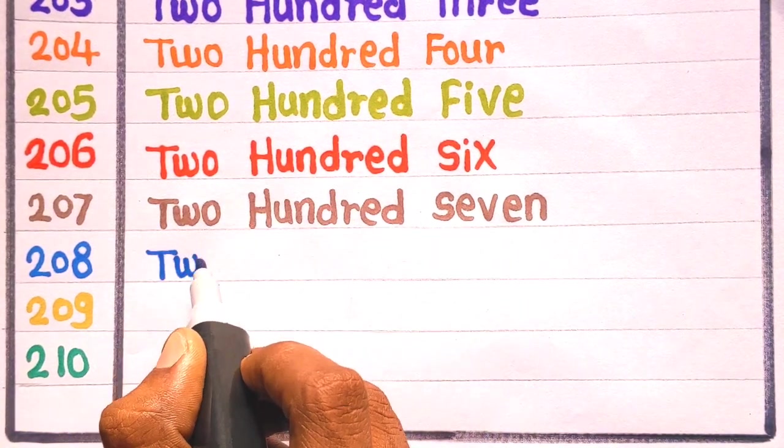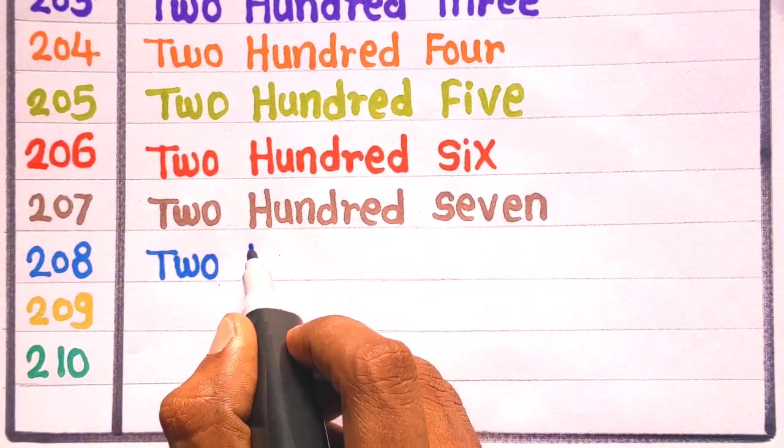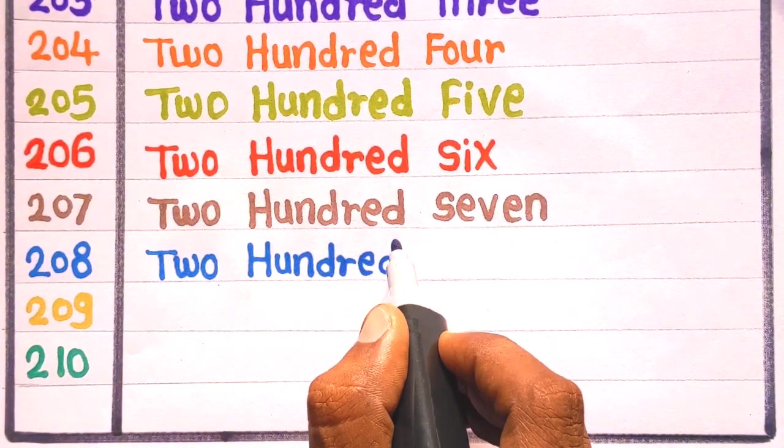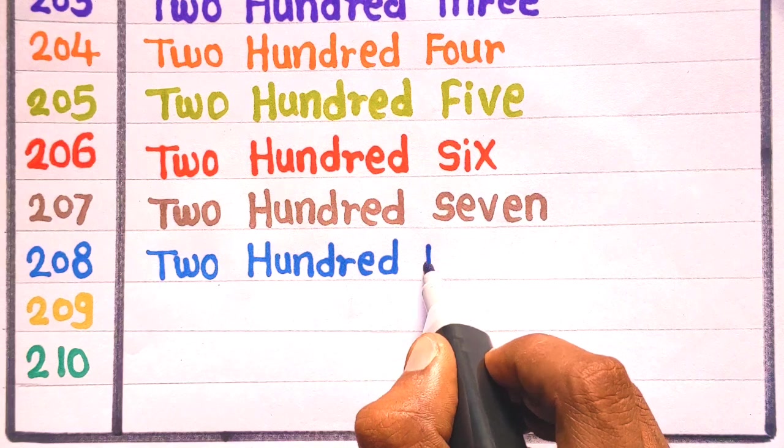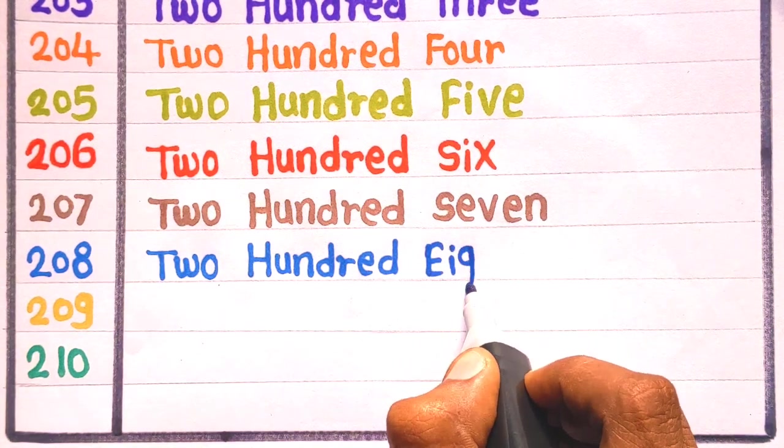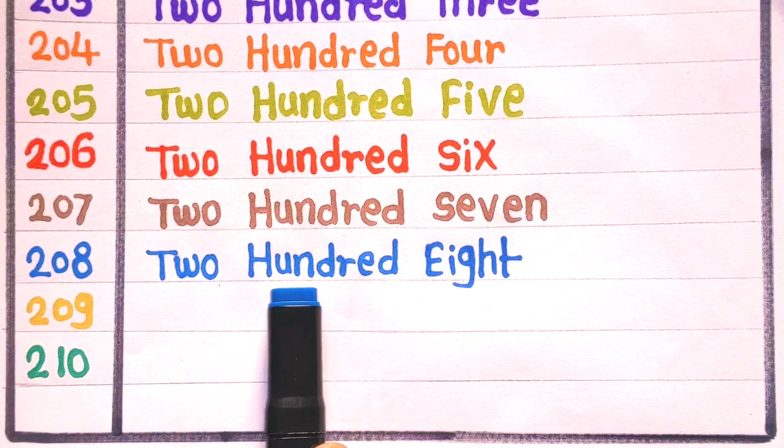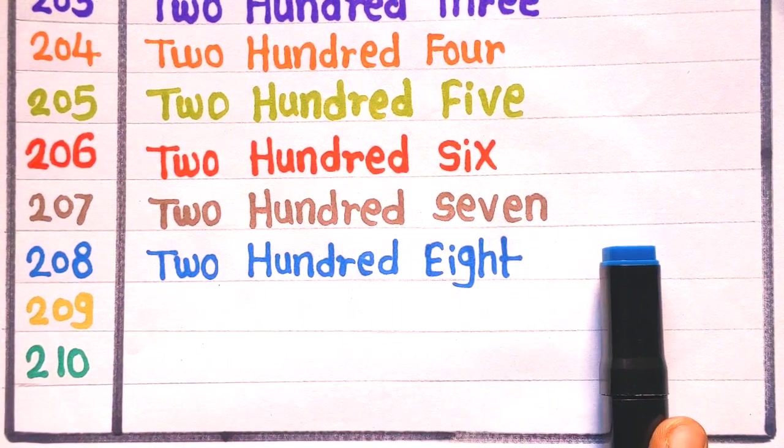E is 208. T, W, O, 2, H, U, N, D, R, E, D, 100, E, I, G, H, T, 8, 208. With the blue color.